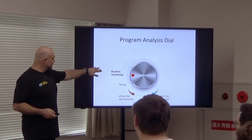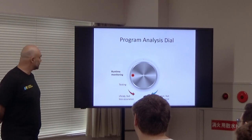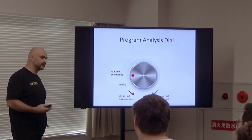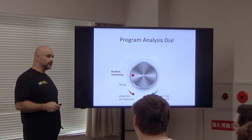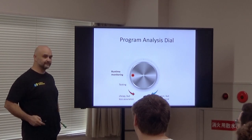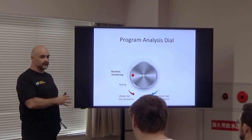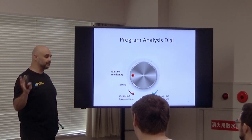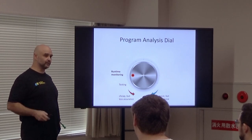Runtime monitoring is placed right after testing because it is relatively easy to achieve once you have a running system. You have to instrument your program to observe what's going on, but that is much lighter than later methods. However, like testing, runtime monitoring does not ensure correctness unless combined with more complicated techniques.